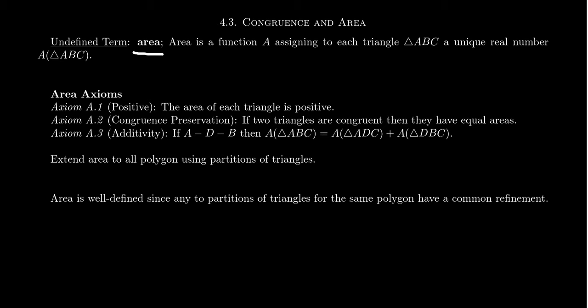One only needs a notion of congruence in order to define area. So these area axioms and this area undefined term will make sense even in places like elliptic geometry, where we don't have the full blown axioms of neutral geometry. The second axiom of area, we'll call congruence preservation. This axiom tells us that if two triangles are congruent, then they will have equal areas. Area is a real number, so we can talk about equality of those. Congruent triangles will have equal areas.